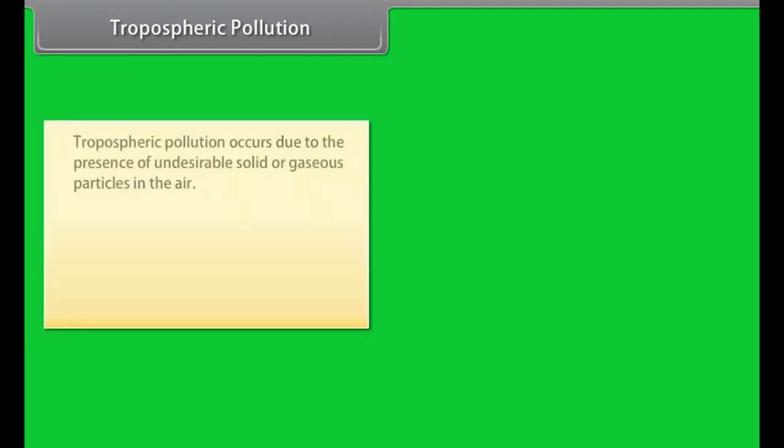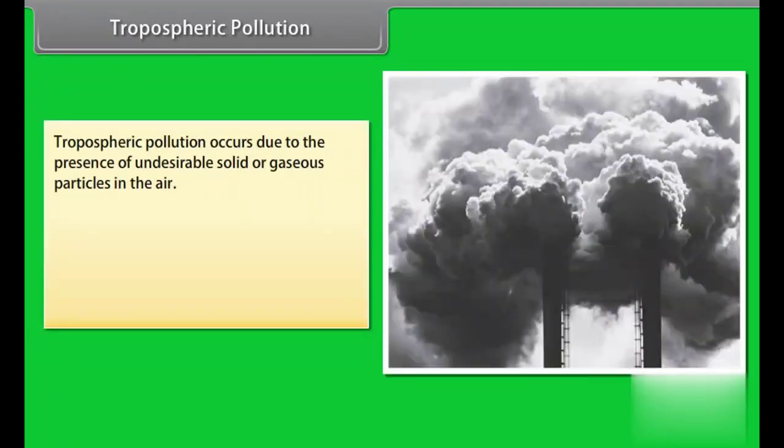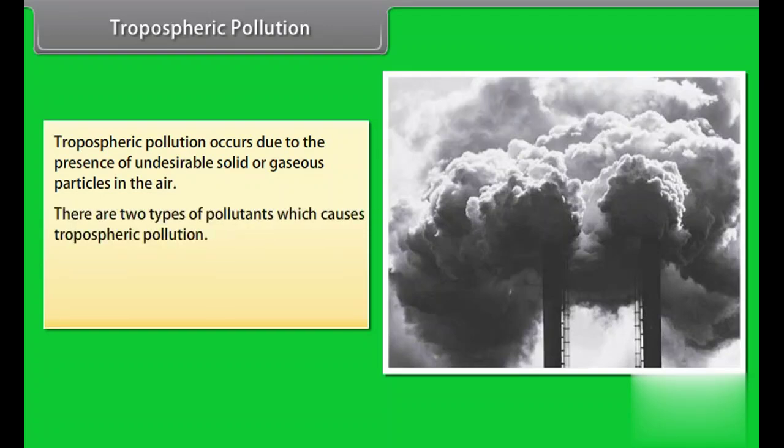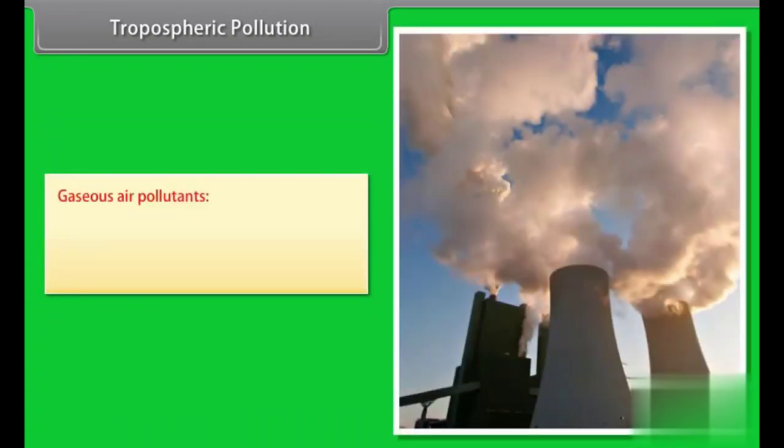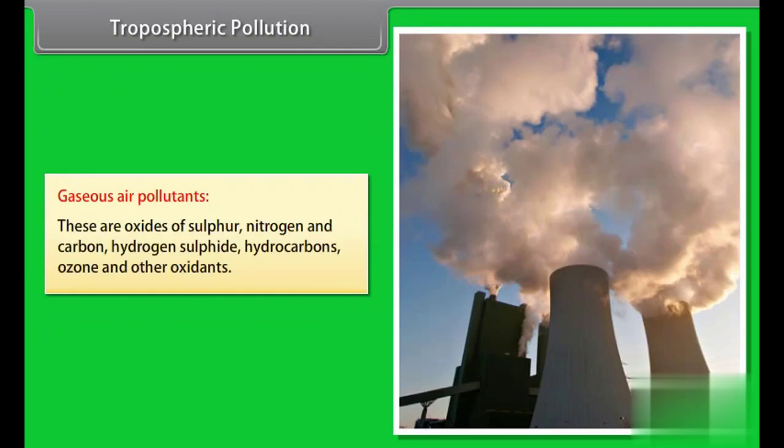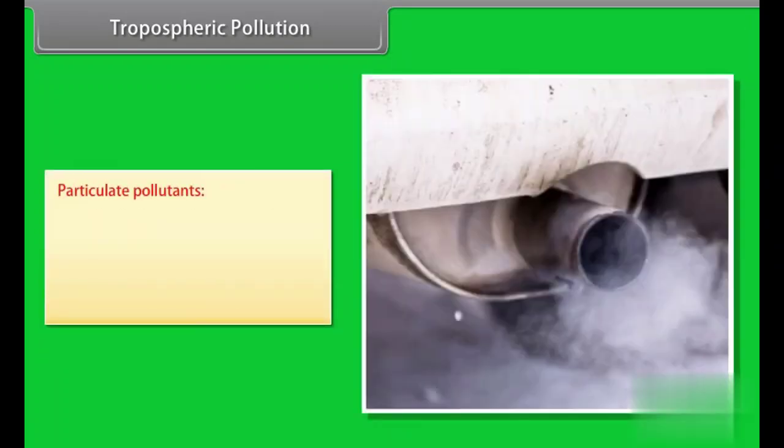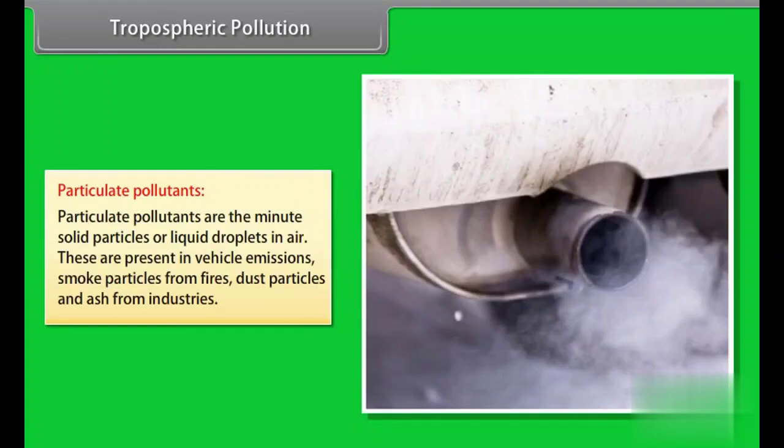Tropospheric pollution occurs due to the presence of undesirable solid or gaseous particles in the air. There are two types of pollutants which cause tropospheric pollution: gaseous air pollutants and particulate pollutants. Gaseous air pollutants include oxides of sulfur, nitrogen and carbon, hydrogen sulfide, hydrocarbons, ozone, and other oxidants. Particulate pollutants are the minute solid particles or liquid droplets in air. These are present in vehicle emissions, smoke particles from fires, dust particles, and ash from industries.